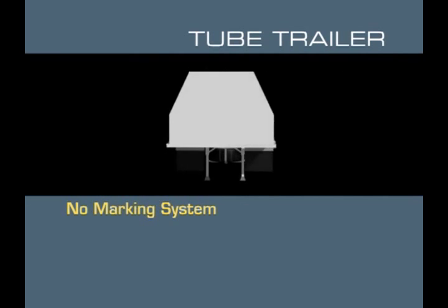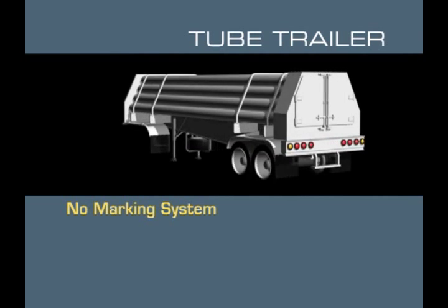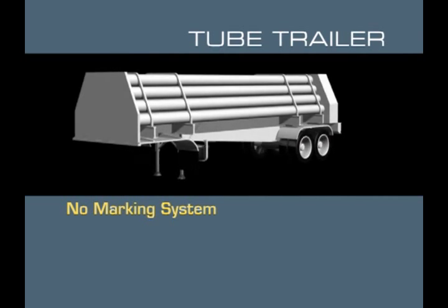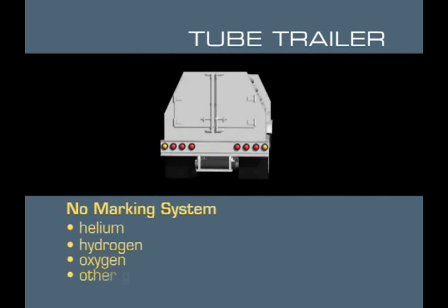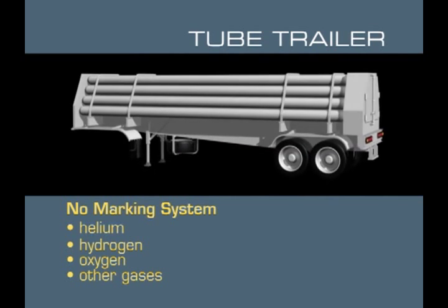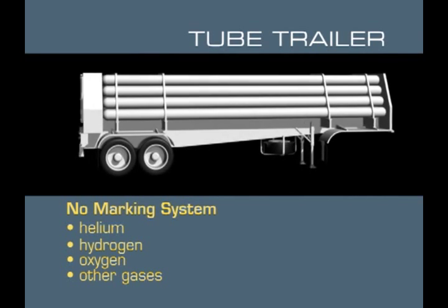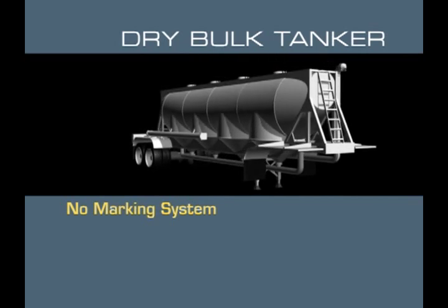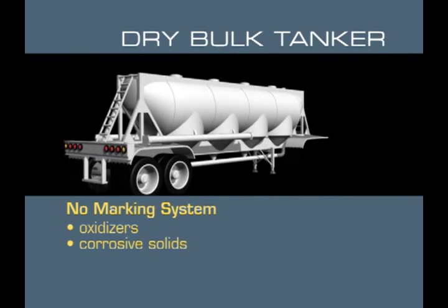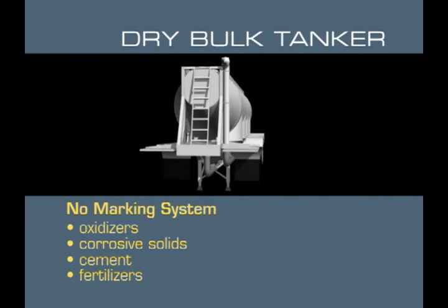Like rail cars, certain cargo tanks are not included in the marking system, but you are still required to recognize them. An example is the compressed gas tube trailer, which carries helium, hydrogen, oxygen, and other gases. It contains individual steel cylinders banded together with protected valves in the rear, and the manufacturer's name may be on the cylinders. You also need to recognize the dry bulk cargo tanker that carries oxidizers, corrosive solids, cement, and fertilizers, with a distinctive over-the-road bottom valve.